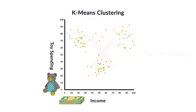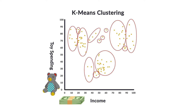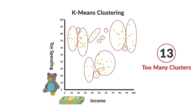So let's try again and decide we're going to use many more clusters. We might have a graph that looks something like this. The problem with this is that now we have too many clusters — in this graph, there are 13. Thirteen is too many separate marketing campaigns to run and too many individual messages to craft.